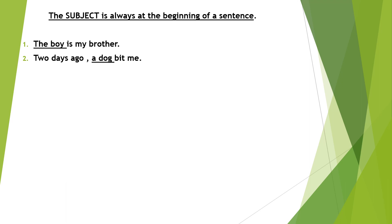Two days ago, a dog bit me. The subject is 'a dog' — an animal. 'Two days ago' is not a subject, because subject means a person, an animal, a place or thing that we talk about. What do we talk about in this sentence? It's an animal — a dog. So that's the subject.